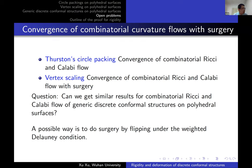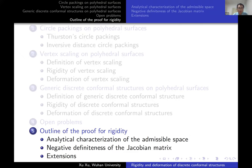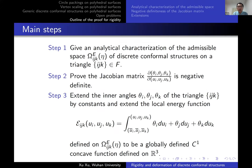Now I will give some details of the proof of rigidity. The proof is composed of three steps and uses a variational principle. In the first step, we give an analytic characterization of the admissible space of discrete conformal structures defined on a triangle. In the second step, we prove that the Jacobian matrix of the angles θ with respect to u is negative semi-definite. In the third step, we extend the angles to be a globally defined continuous function and extend the locally defined energy function E_IJK to a globally defined C¹ concave function on ℝ³.